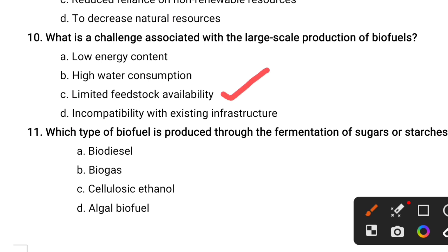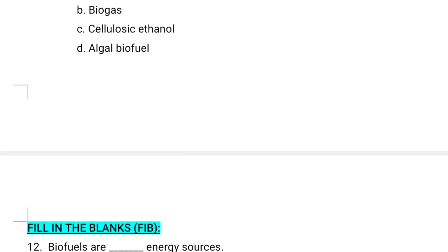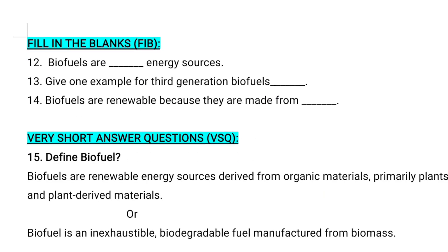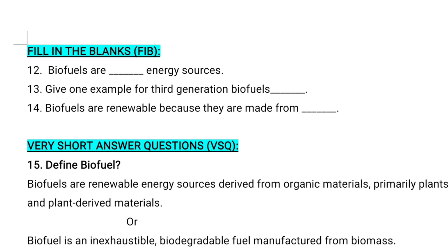Which type of biofuel is produced through the fermentation of sugars or starches? Options are: biodiesel, biogas, cellulosic ethanol, algal biofuels. The correct answer is cellulosic ethanol. Let's see the next category of questions.